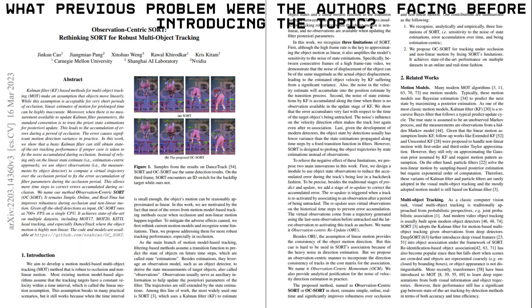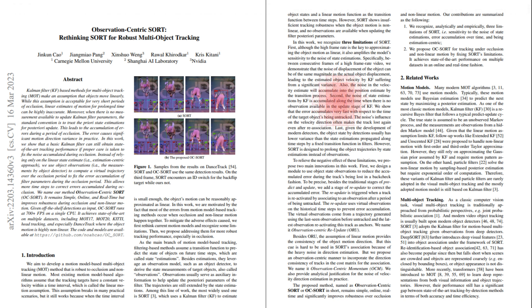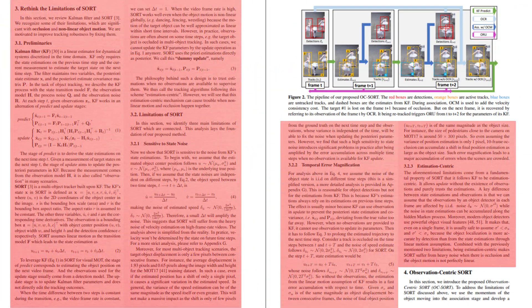What previous problems were the authors facing before introducing this topic? Older trackers like Sort were struggling with a few major issues. First, linear motion assumption: they relied on Kalman filters that assume objects move in straight lines, which isn't realistic in dynamic environments. Second, error accumulation during occlusion: when objects are temporarily hidden, trackers made guesses about their position, which led to compounding errors. Third, estimation-centric design: the system trusted its predictions more than the actual observations from the camera, leading to identity switches and poor tracking accuracy.